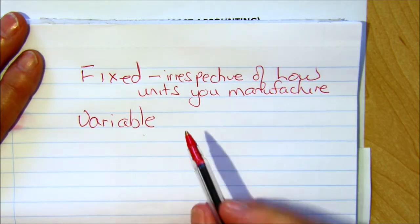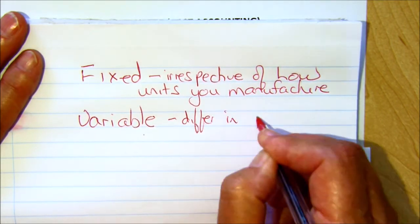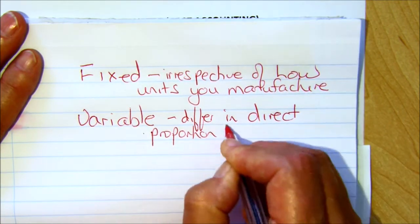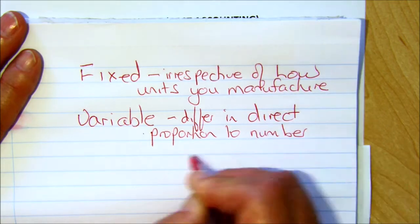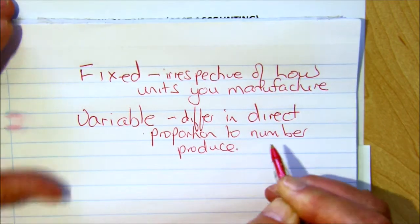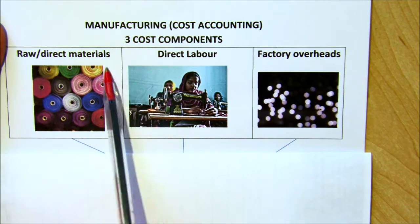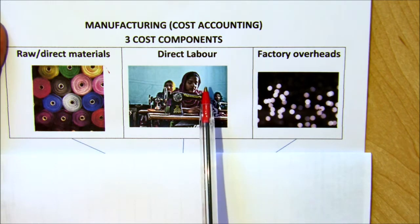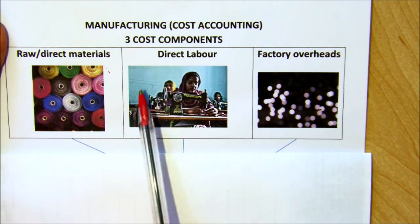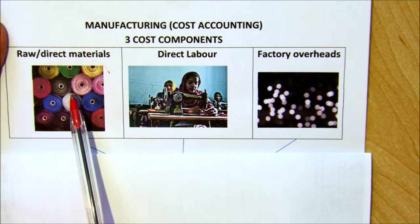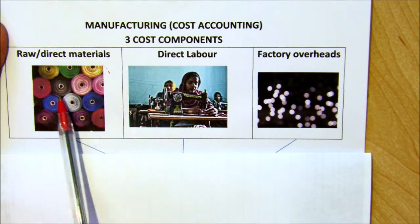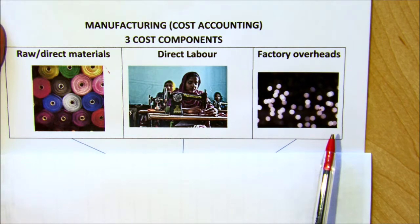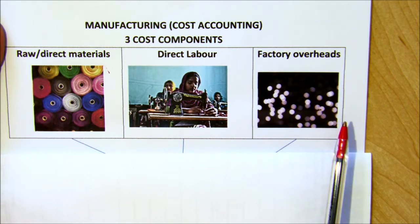Whereas your variable costs will differ in direct proportion — and this word is very important — in direct proportion to the number produced. So the more you produce, the more your variable costs will be. Our raw materials would be a variable, because every t-shirt would have its own material. The labour would also be a variable, because every t-shirt has to be sewn, and if you increase the number of items produced, your variable costs are going to increase. Whereas your factory overheads would be examples of fixed costs — they will stay the same irrespective of how much you produce.